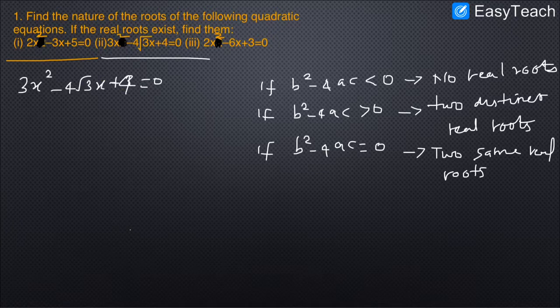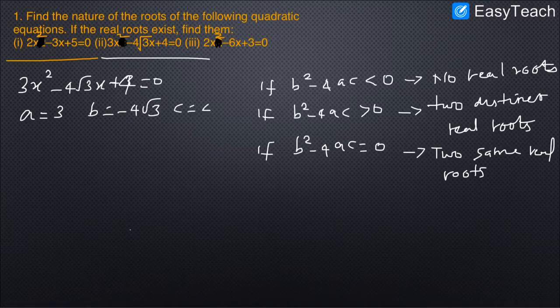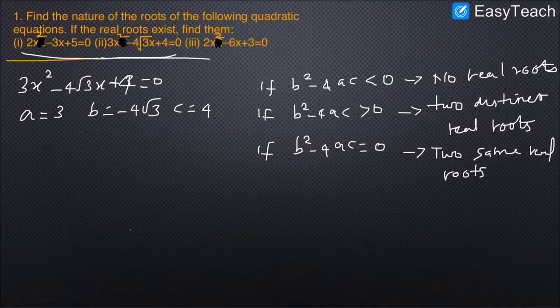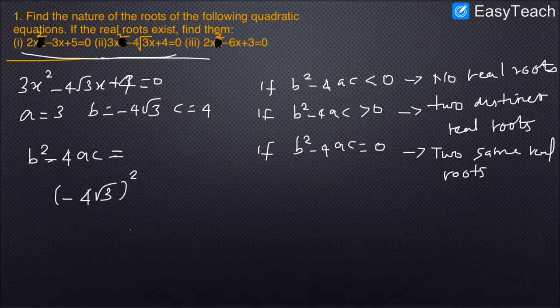The second problem is 3x²-4√3x+4=0. Here a=3, b=-4√3, and c=4. Make sure the equation is in standard format before solving. We now find the discriminant b²-4ac: (-4√3)²-4×3×4.